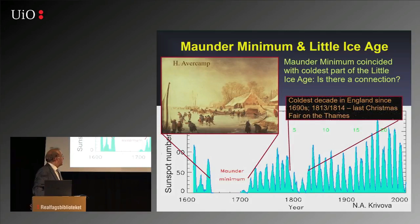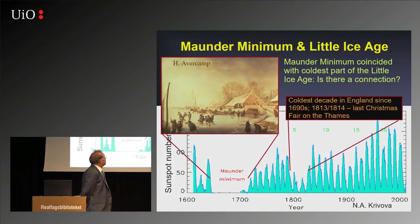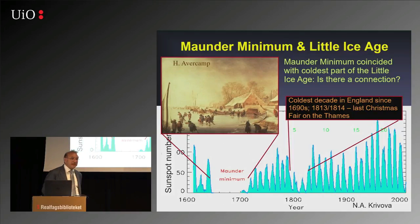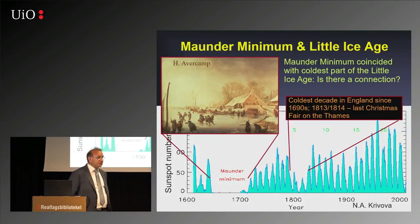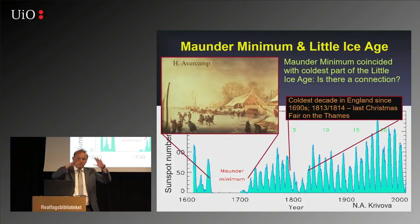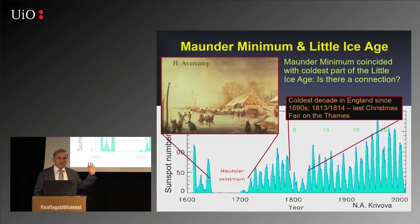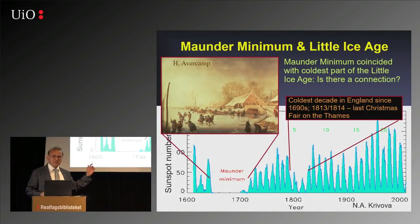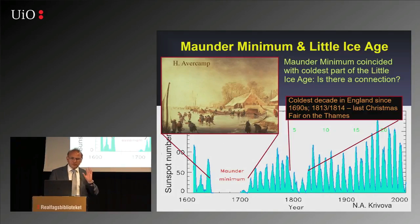There is another period with weaker sunspots around 1800. That was the last time that the River Thames froze in England sufficiently that they could have a Christmas market on it — they built houses and stuff on the frozen River Thames. Never happened again. But you have to be careful, because in the meantime they've built dams and stuff, and the water flow is different.